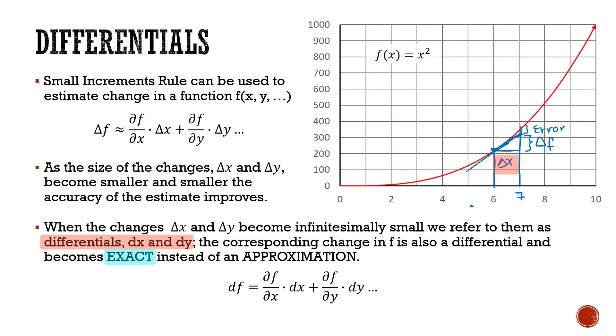That error gets so small it becomes insignificant. We change the notation such that this becomes equal, and instead of deltas, those triangles indicating the changes in f, x, and y, we call it df, dx, dy respectively. These are what are referred to as differentials, the result when our change in x or our change in y are infinitesimally small.